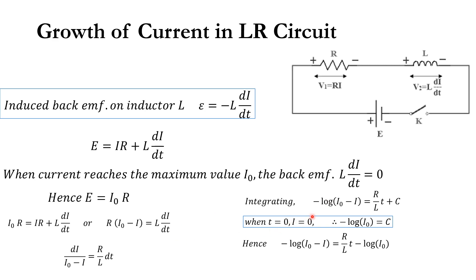Integrating, we get: minus natural log of (I₀ minus I) equals (R/L)·t plus C, where C is the constant of integration.